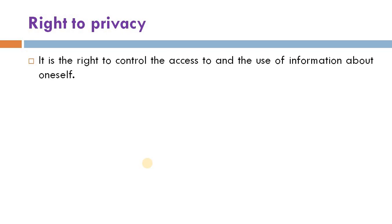The right to privacy is the right to control access to and the use of information about oneself. For example, our personal information can be kept private, but in certain cases the organization can look into it. Regarding payment of insurance premium or medical insurance, the employer does not have the right to see this, but the payment department in your organization can view this information.